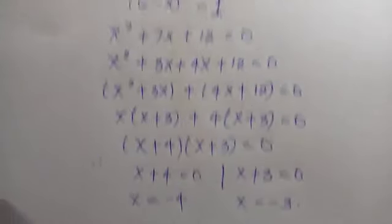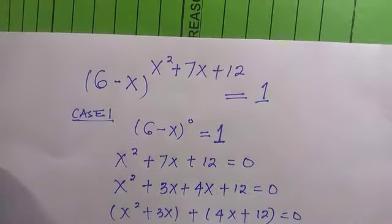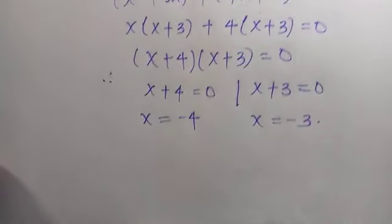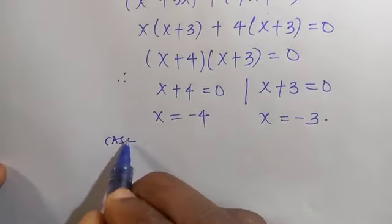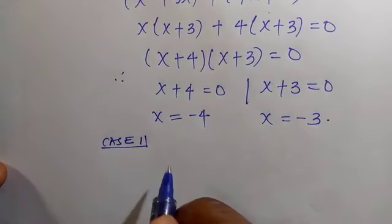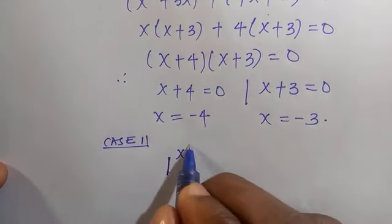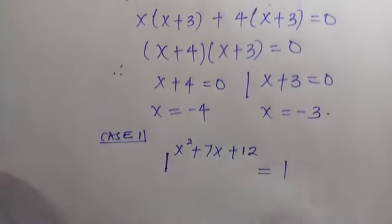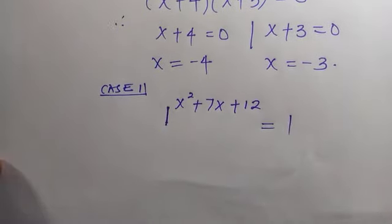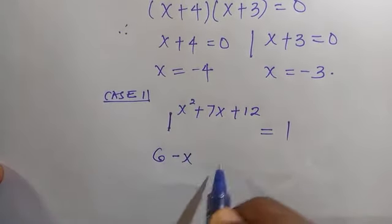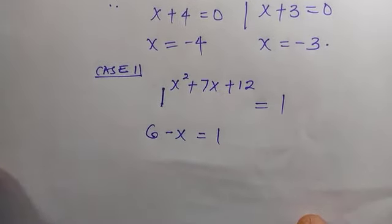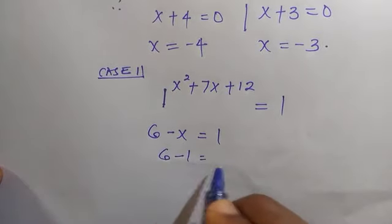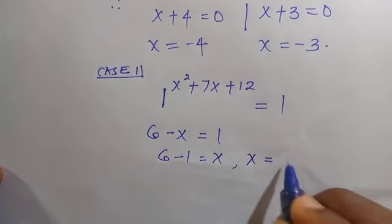That's the first case. Now let's see the second case. This is a linear equation — if we raise 1 to the power of the expression x² + 7x + 12, this equals 1 provided the result is even. So we set 6 - x = 1. Solving, we get x = 6 - 1 = 5.